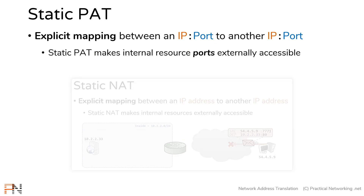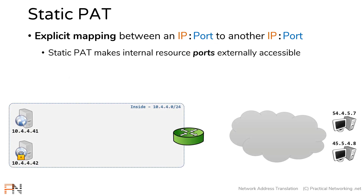The overall goal of a static PAT is to make an internal resource's ports externally accessible. This is different from a static NAT, in which we made an internal resource externally accessible by IP address — here, we're doing it by port. In this topology, we have a couple of hosts on the outside and two internal hosts. Since we're doing a PAT, we're concerned with these hosts' IP addresses and the ports from which they're hosting a particular service. This server is hosting a service on IP address 10.4.4.1, port 8080, and this server is hosting a service on IP address 10.4.4.2, port 443.